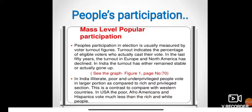This is a contrast when compared with western countries. In the US, the poor, Afro-Americans, and Hispanics vote much less than the rich and white people. Comparing the election process of the US with India, we are opposite to one another — in the US the rich have more votes, while in India the poor people have more votes compared to the rich.